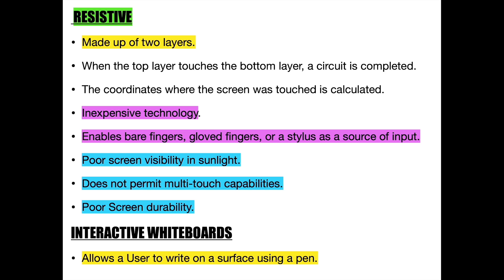We have now discussed all three major types of touch screens. The next device is the interactive whiteboard, which is a digital whiteboard that allows a user to write on it using a modernized pen. These types of whiteboards are used in schools and offices, as they make teaching and presentations an efficient process.